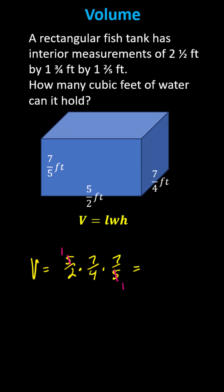In the numerator we have seven times seven which is forty-nine. In the denominator we have two times four which is eight. The exact volume is forty-nine eighths cubic feet.